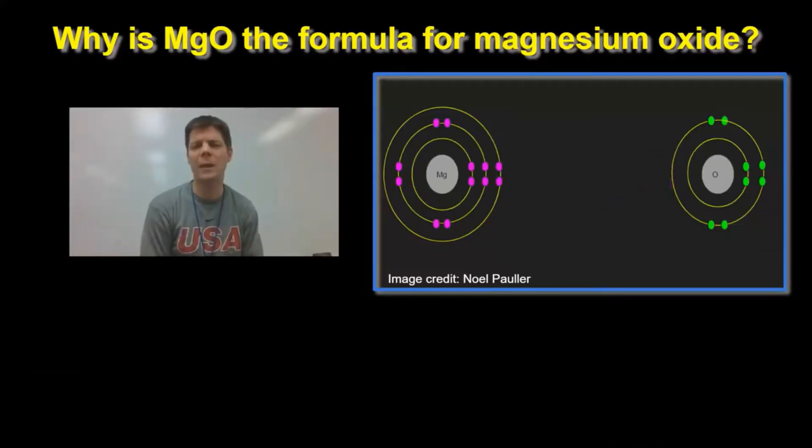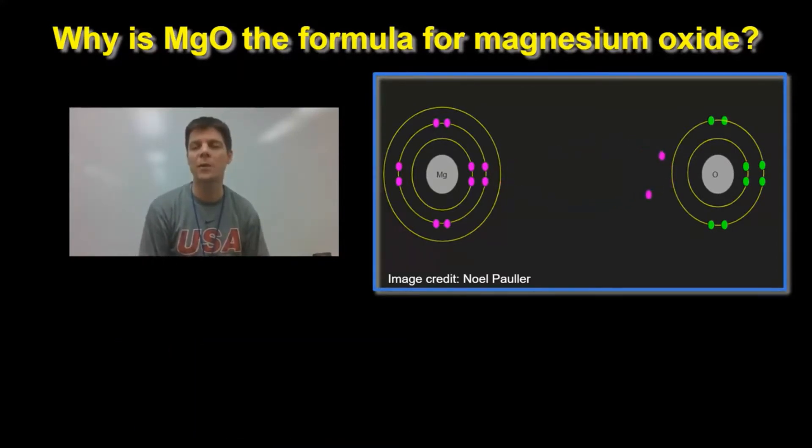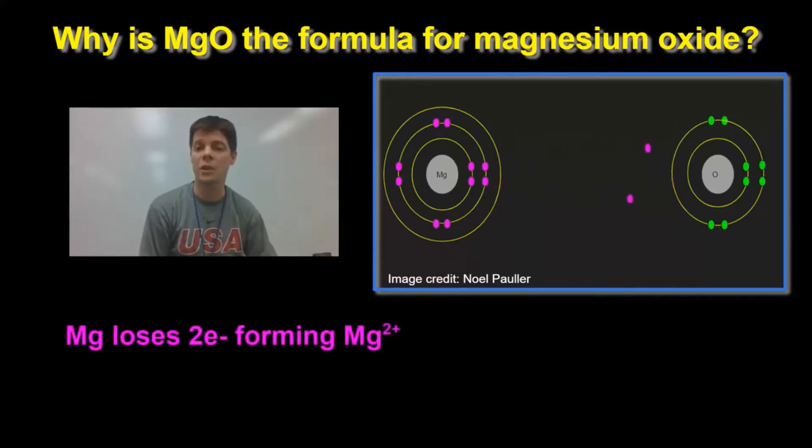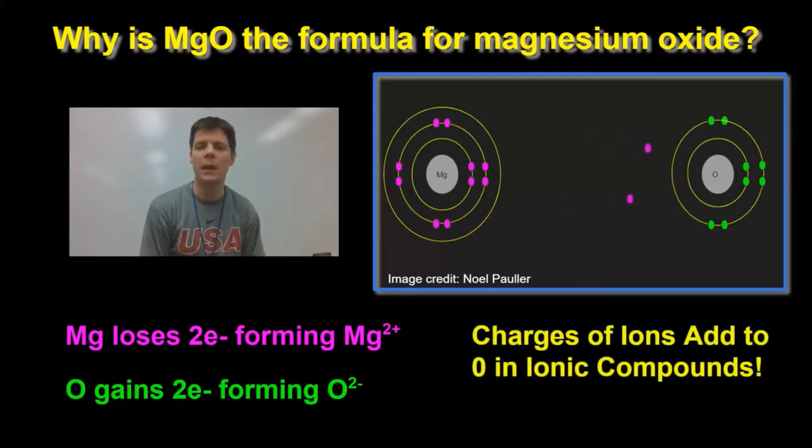So why is the formula of magnesium oxide MgO? Why not MgO2 or Mg2O or some other thing? Well, to understand this, we need to know that in ionic compounds, the ions, the positive ion and the negative ion, are going to pair in a way that produces a neutral compound. Remember, the magnesium atoms are losing 2 electrons, giving them a plus 2 charge. The oxygen atoms are gaining 2 electrons, causing them to form a minus 2 charge ion. So the ions will pair in this compound in a 1 to 1 ratio, Mg2 plus, O2 minus. The charges add to zero, and that means that I have an electrically neutral compound.